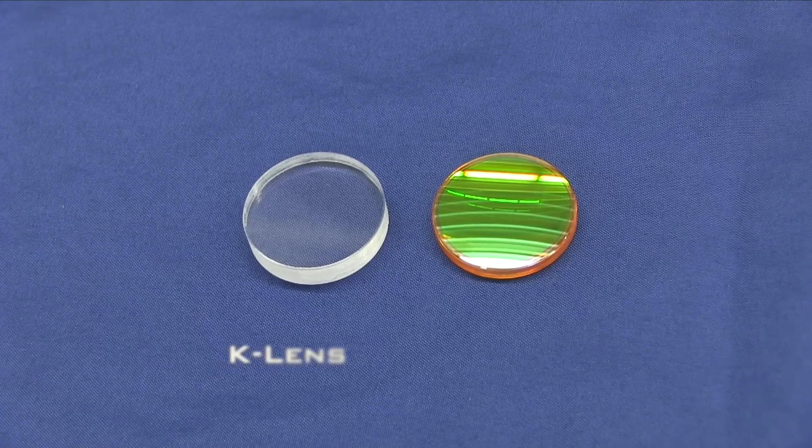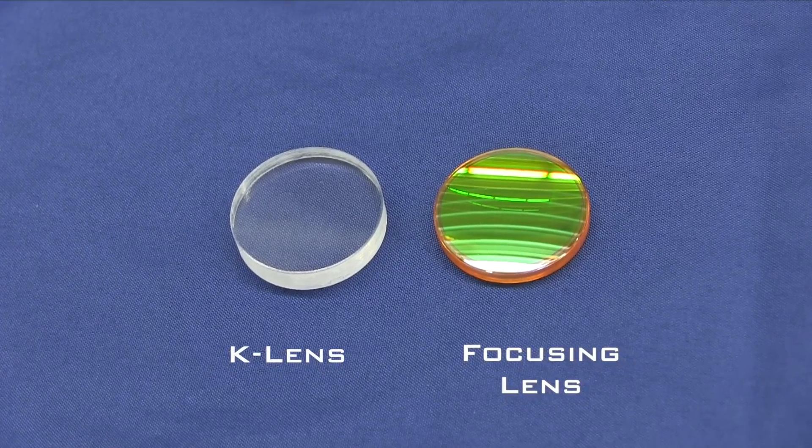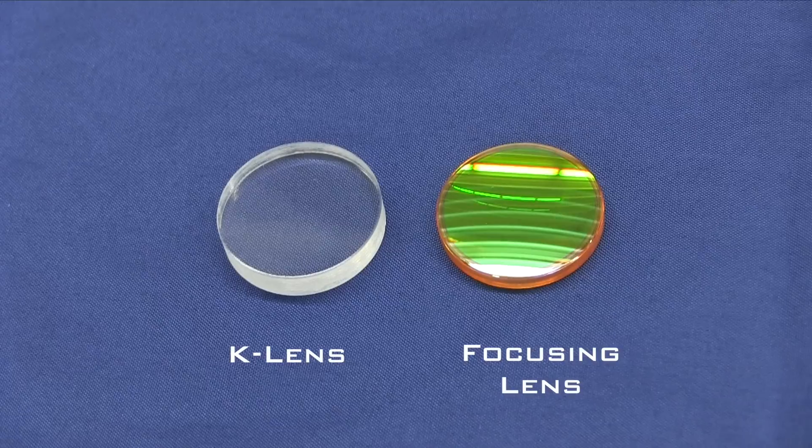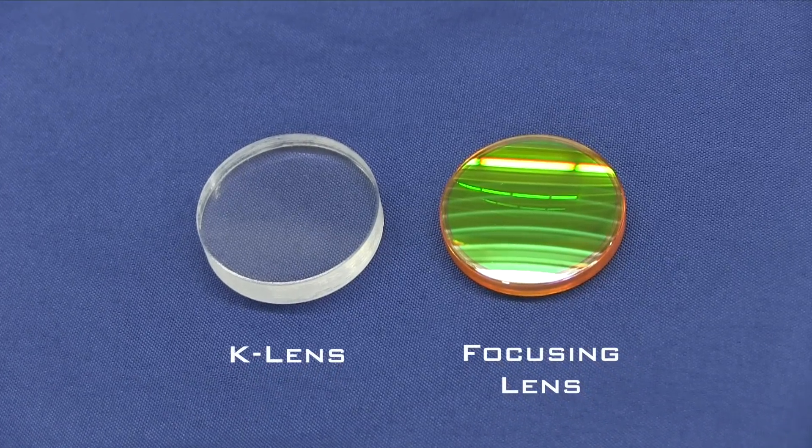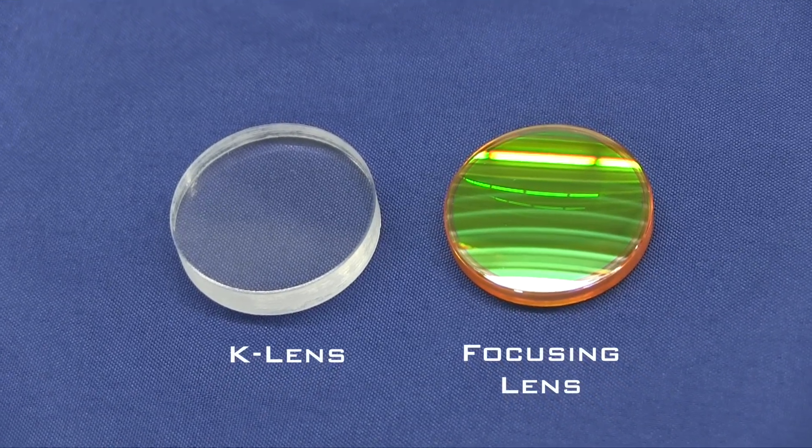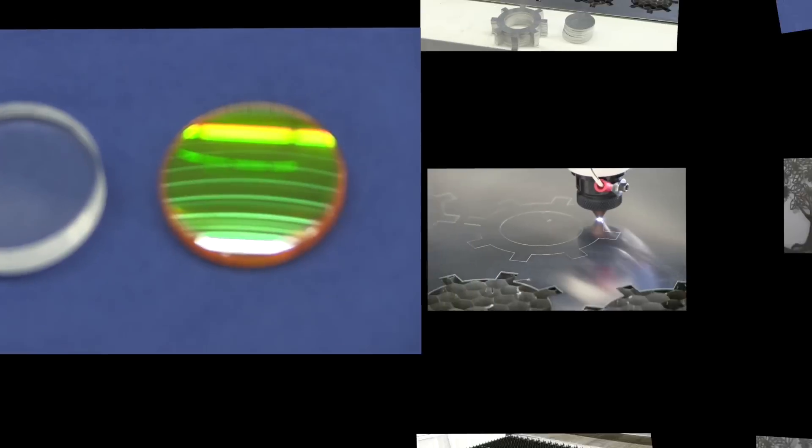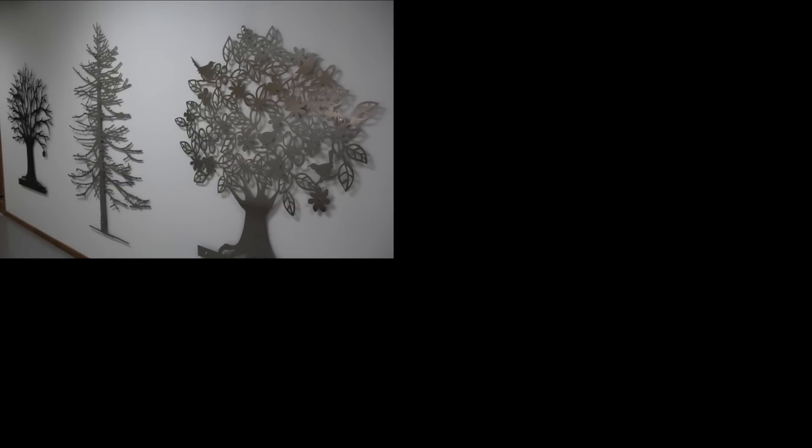A lens protector known as a K-Lens is installed between the focusing lens and the metal being cut, protecting the optic from reflection and pitting. The K-Lenses are economically priced to allow for daily or weekly replacement.